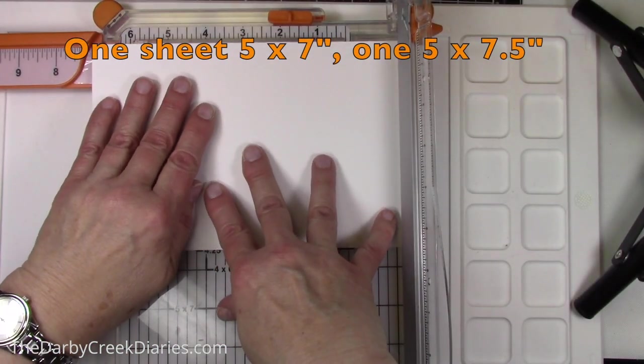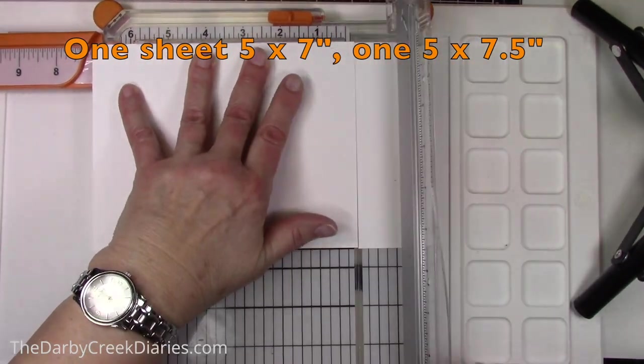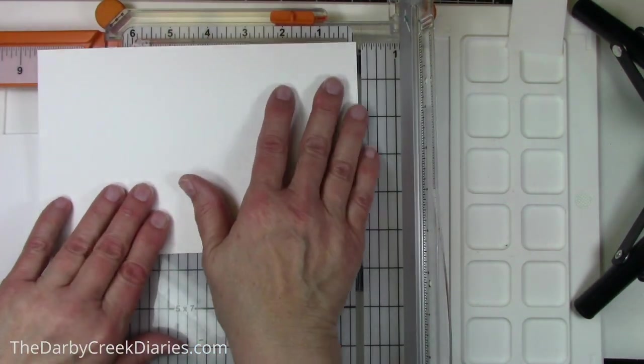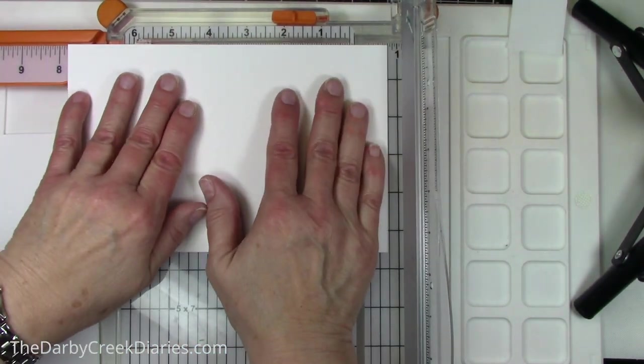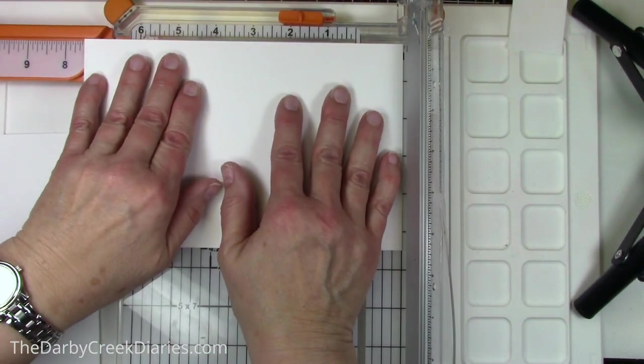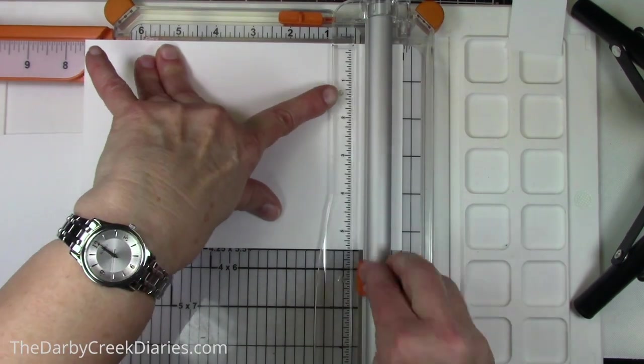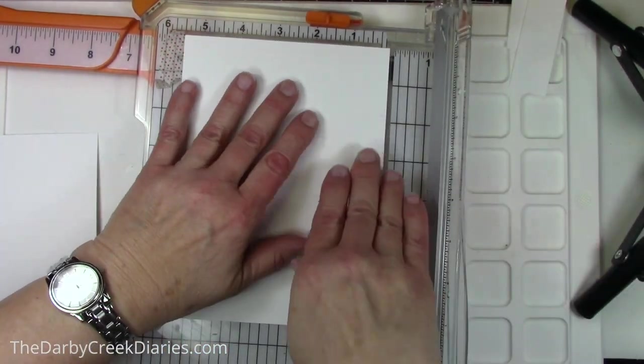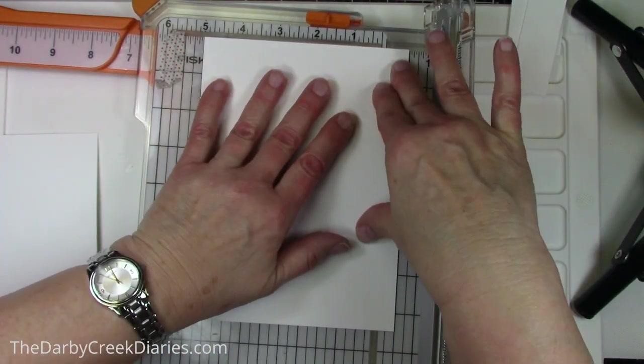Now we're going to make the card base. This is a five by seven card but I have to make it out of eight and a half by eleven paper. So one side of it is five by seven and the other is five by seven and a half because I'm going to make a little flap here.